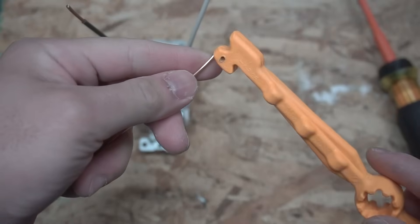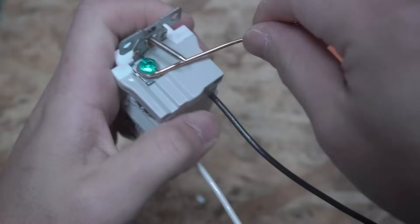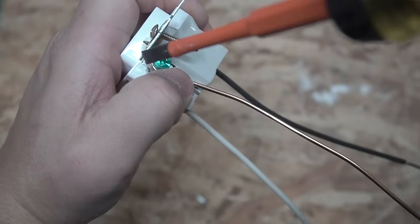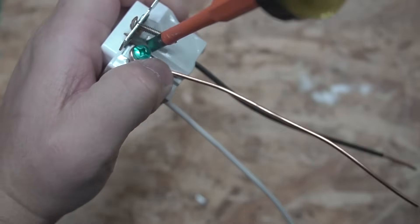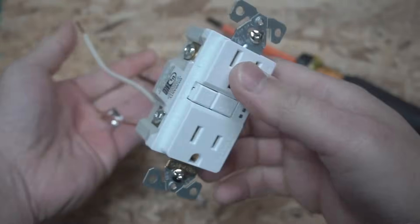You can make that nice and tight. We're going to install the ground pigtail. Now, I'm using the Volclaw to make that J-hook. Make sure you insert this on a clockwise manner and then tighten that down. So, now this is ready to be installed onto our first J-box.